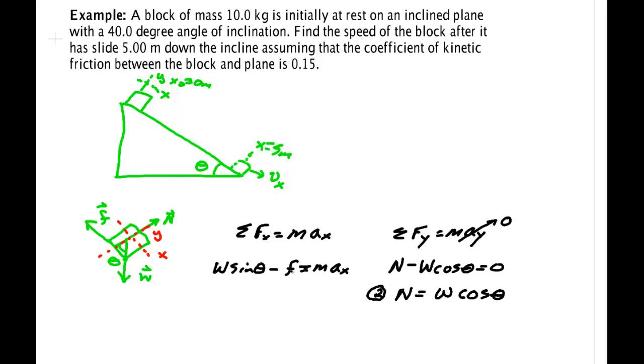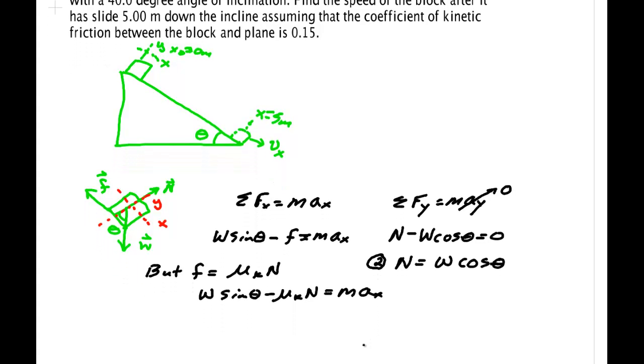Over here on the other side I need to put in something about friction. But for kinetic friction, f is equal to mu k n. So I have w sine theta minus mu k n is equal to m a x. I'll call that equation 1.